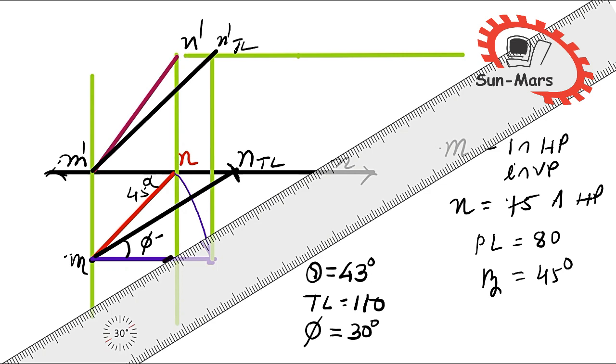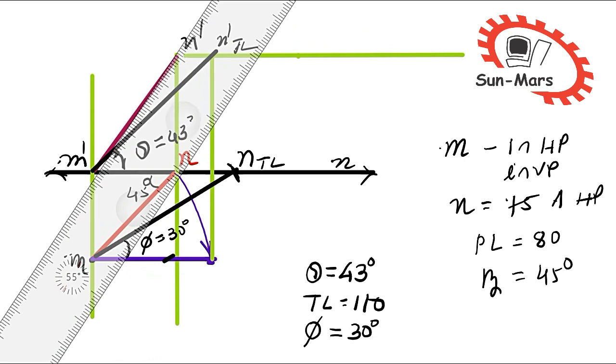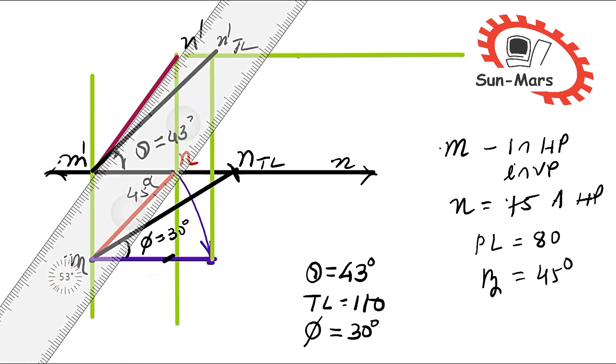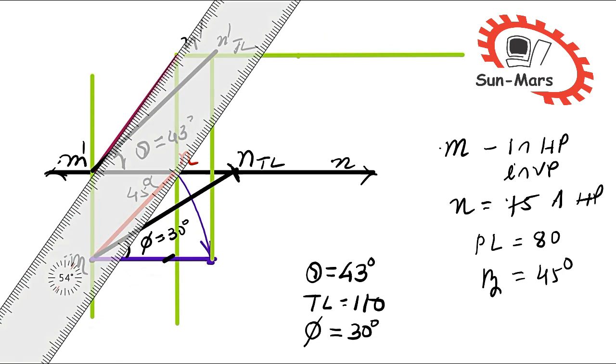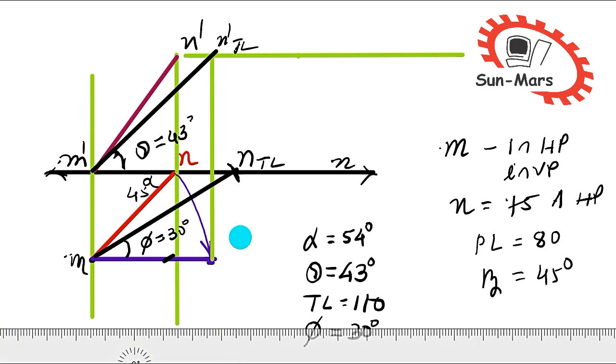Theta is equal to 43 degrees. Alpha will be... so alpha is equal to 54 degrees. So friends, in this way we can solve this example.